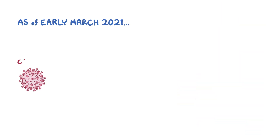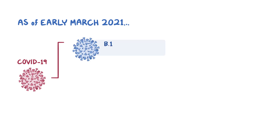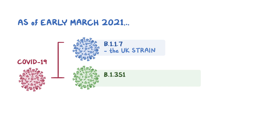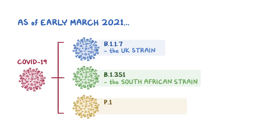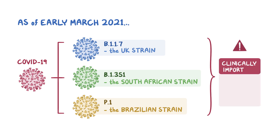As of early March 2021, there are three clinically important strains of COVID-19: B117, also called the UK strain; B1351, also called the South African strain; and P1, also called the Brazilian strain. While there are a number of other strains that exist, these three strains are clinically important because they potentially may be more contagious and more virulent than the original COVID-19 strain.